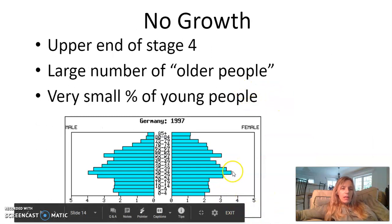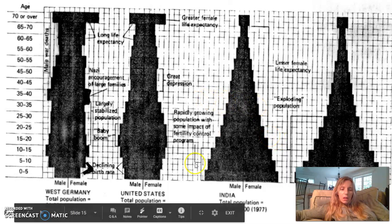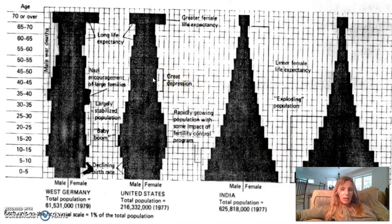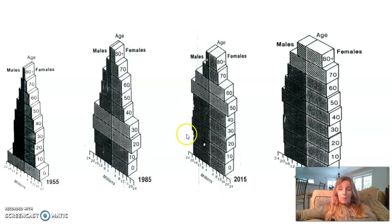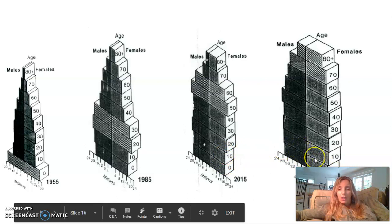For no growth, here's Germany — stage four — with a very rectangular shape. Historical events also shape population pyramids; for example, the Great Depression caused a visible shrinkage in a cohort group due to high deaths. A rectangular shape represents no growth, while a pyramid inverting at the bottom represents negative growth.